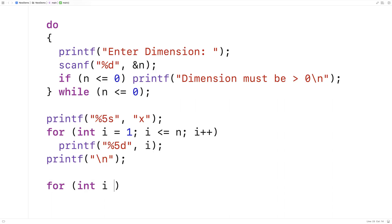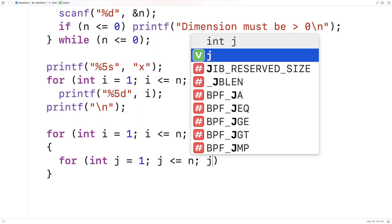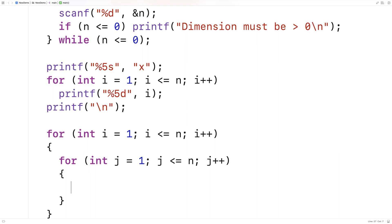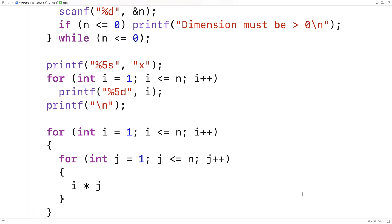We'll have for int i equals one, i less than or equal to n, i plus plus, and then we'll have an inner loop for int j equals one, j less than or equal to n, j plus plus. In here we're going to multiply i times j, and these two loops working together, going from one to n for i and one to n for j, are going to give us that 2D grid of products that we need.